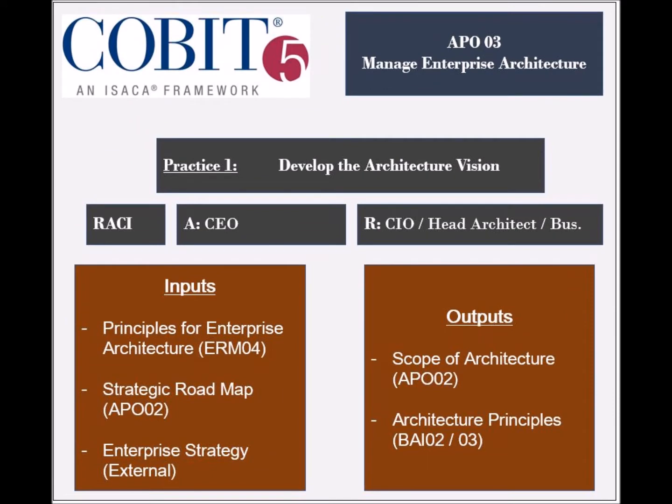This process has five practices, and the first one is to develop an architecture vision. From a RACI chart's perspective, the entities that are responsible for this practice include the business executives, the architecture board, and the chief information officer. The entity that is held accountable is the chief executive officer.